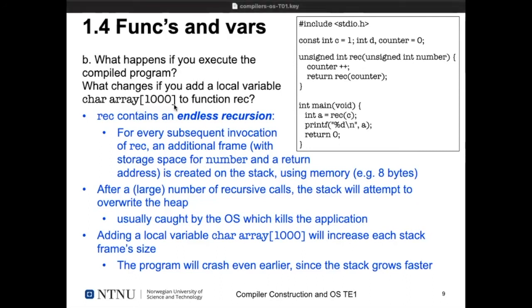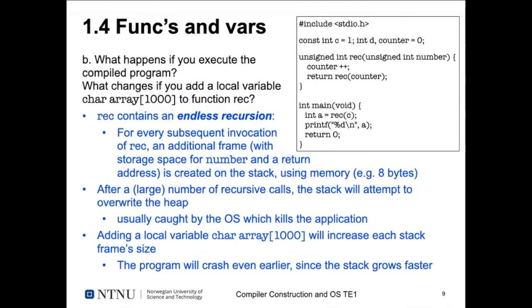The second part asks: what changes if you add a local `char` array of 1000 bytes to `rec`? Each stack frame would be 1000 bytes larger, so you'd have fewer iterations before crashing — instead of allocating 8 bytes per call, it allocates 1008 bytes, reaching the top of the heap faster. It would crash earlier. This is very difficult to measure on modern systems because they're so fast. You need to take care of this especially when using recursion, because it can eat up memory very fast and produce crashes that are hard to debug.